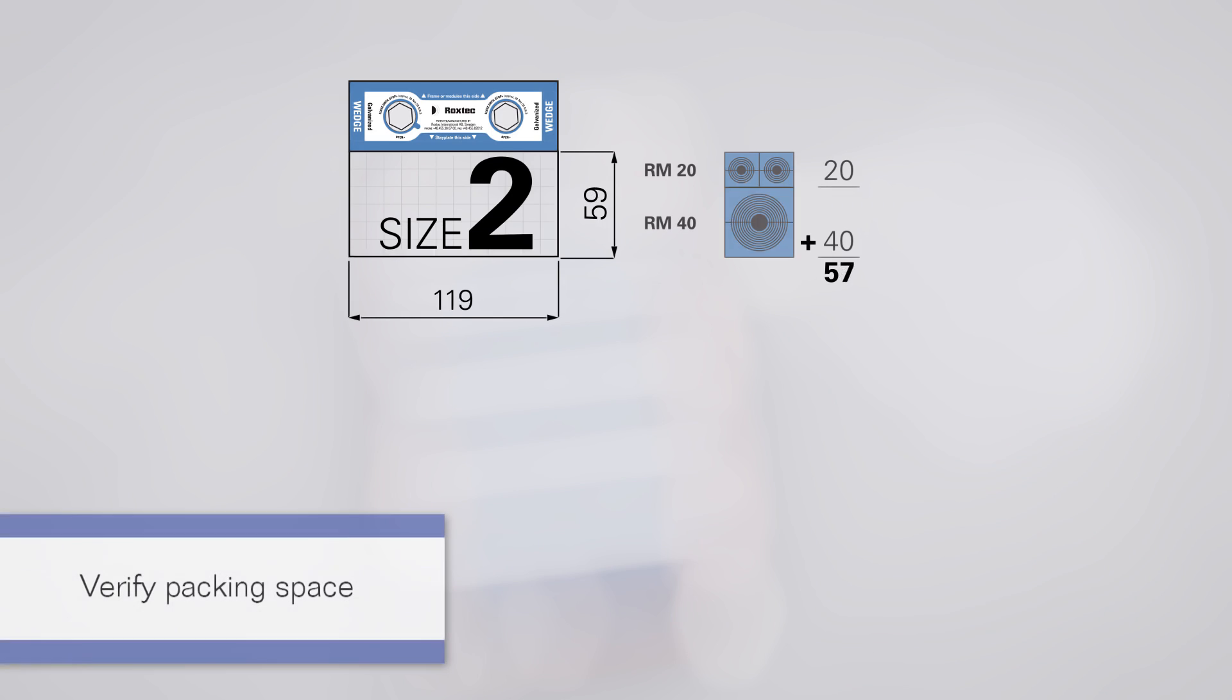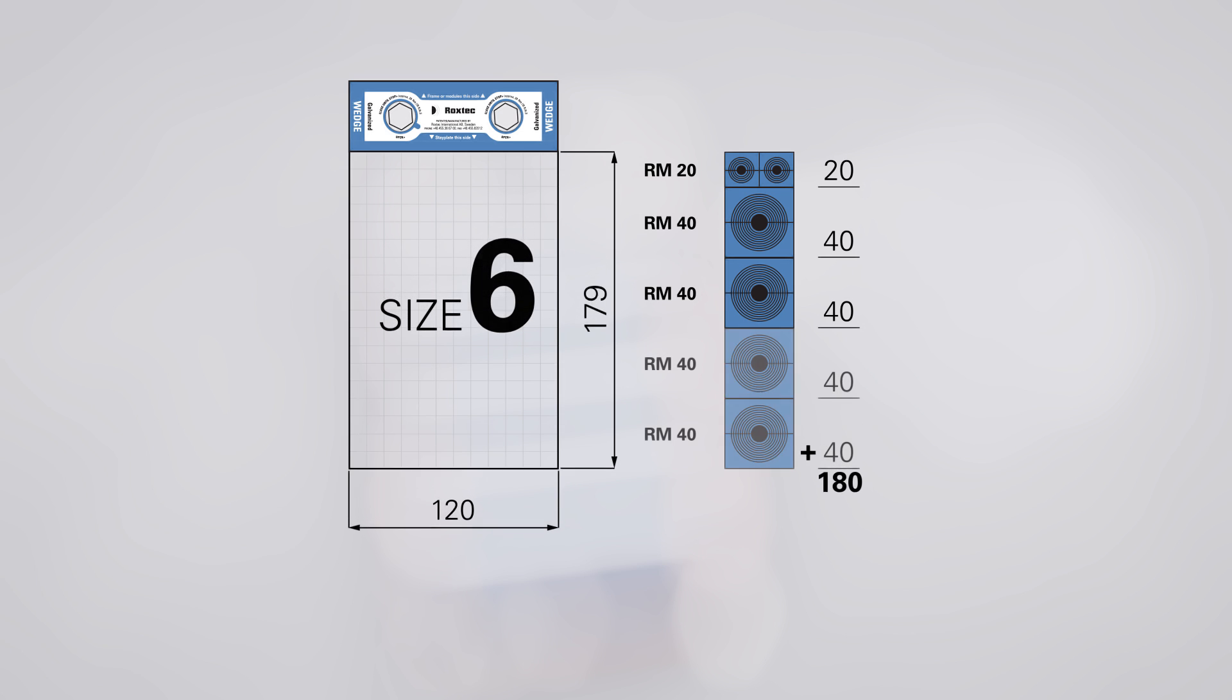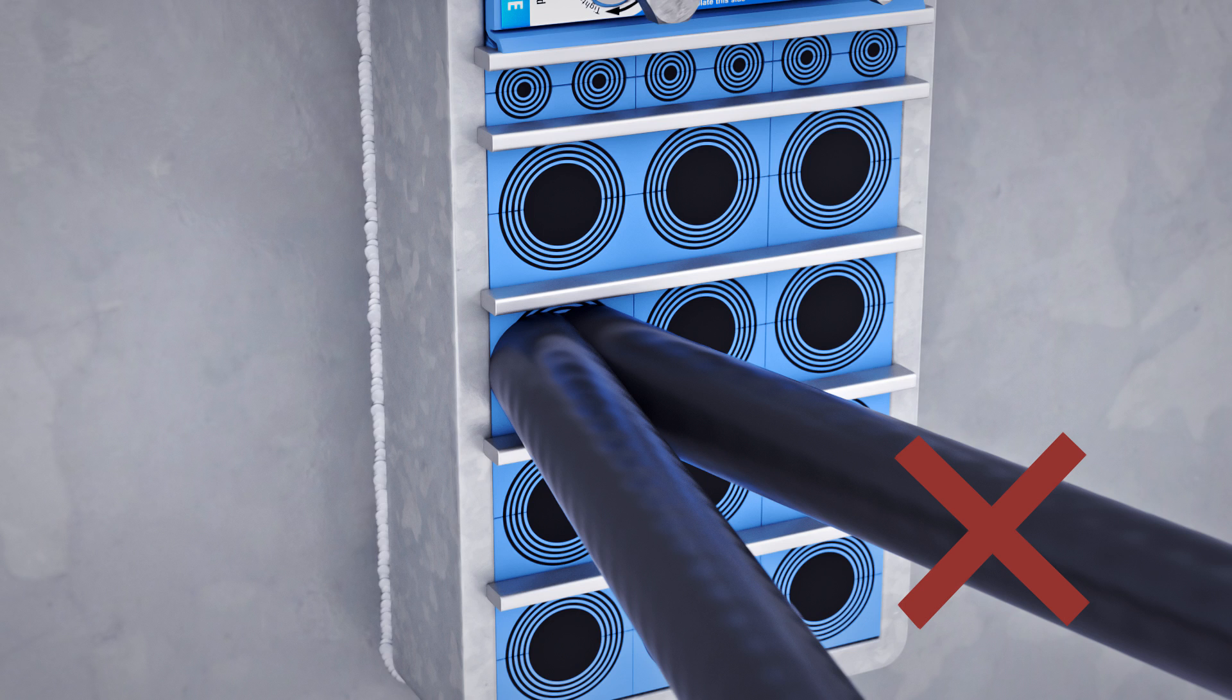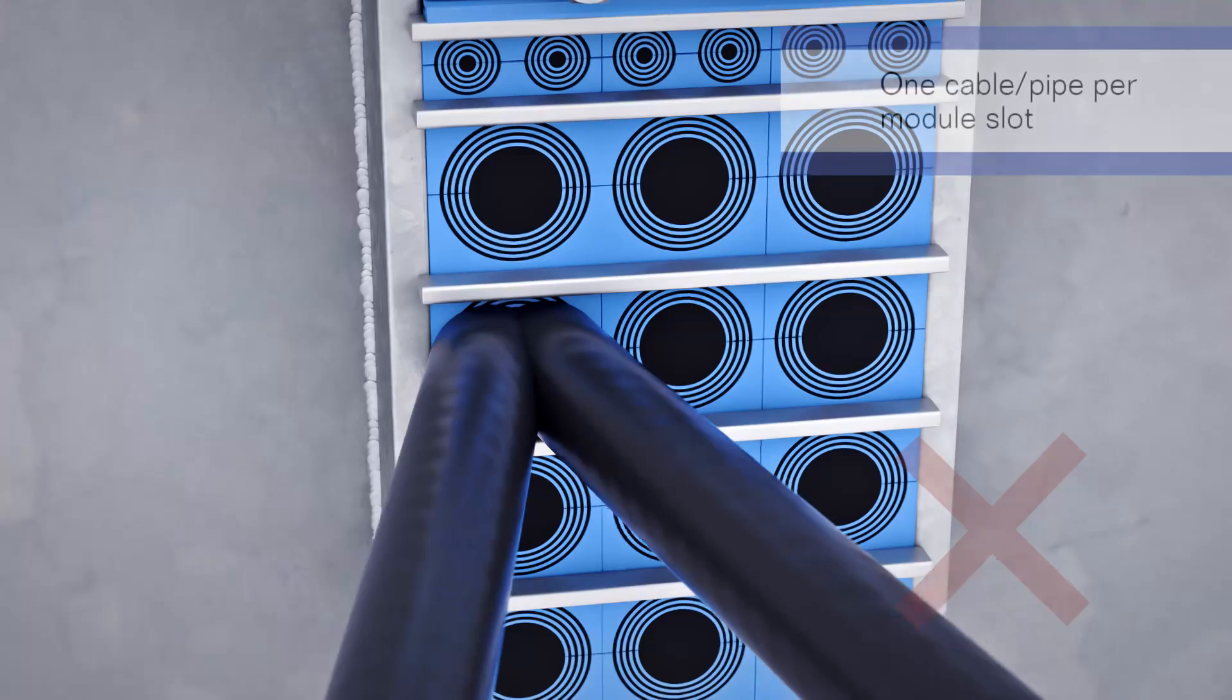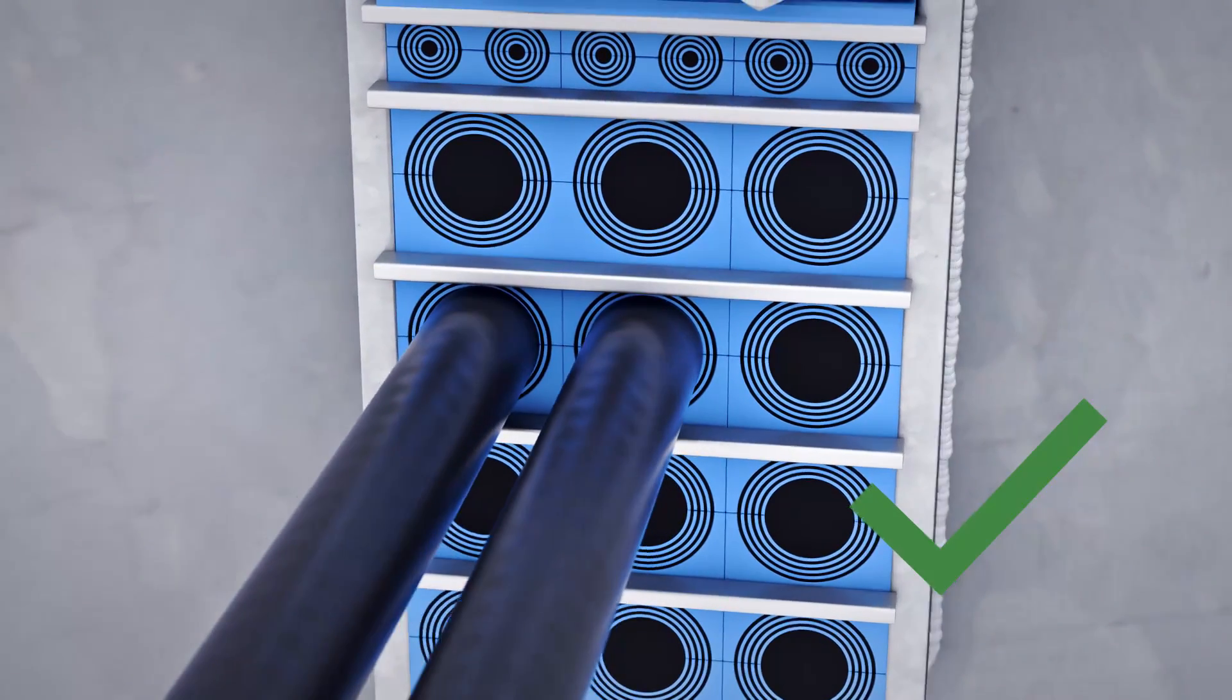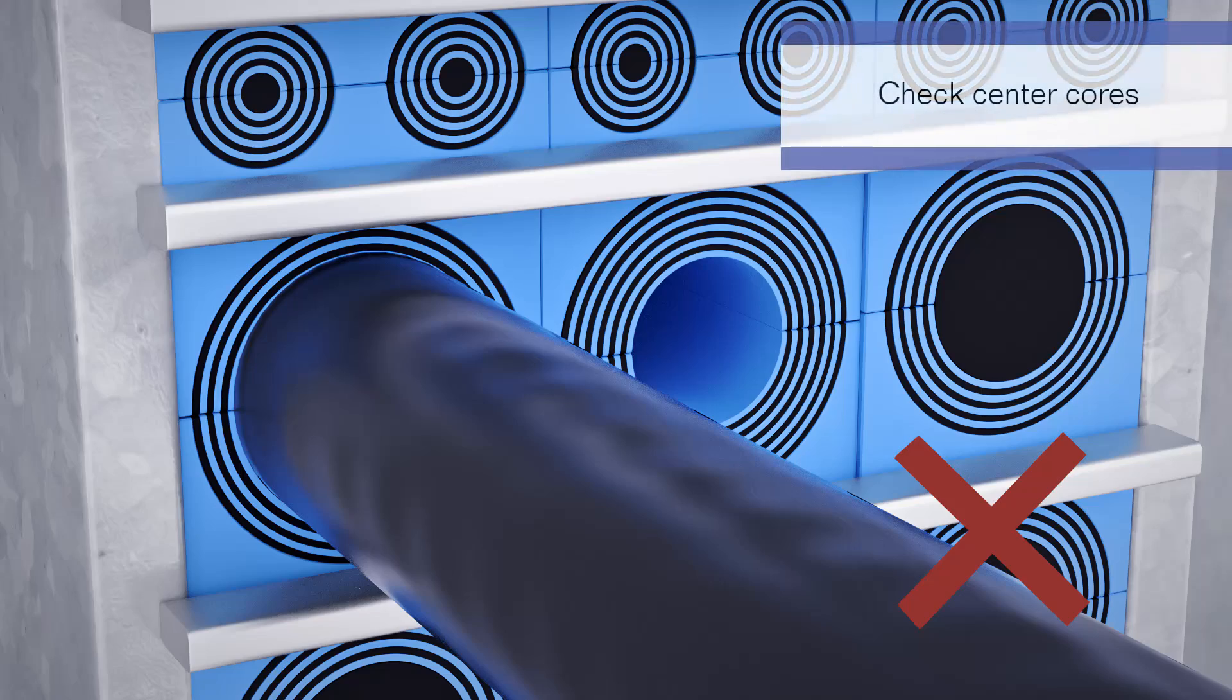Verify the utilization of the packing space according to installation instructions. Make sure that multiple cables or pipes don't pass through the same module slot. Check that there are no center cores missing.